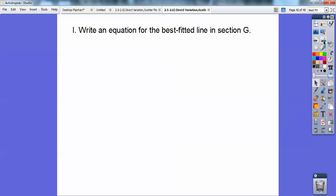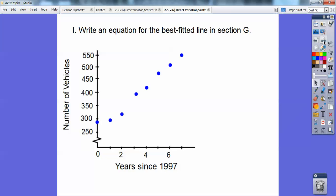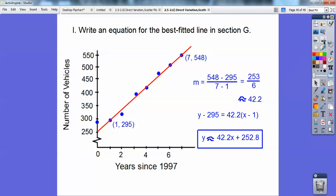So write an equation for the best fitted line in section G. So there's the graph right there. I'm going to go ahead and put that line right up the middle. Now yours might be a little different. Just the one that you think best fits all those points right there. Choose two points. I chose the top one and this guy right here to write an equation. So I did slope Y sub two minus Y sub one over X sub two minus X sub one. And I get about 42.2. And then did Y minus Y sub one. I chose this to be Y sub one equals M times X minus X sub one. And I get this equation right here.